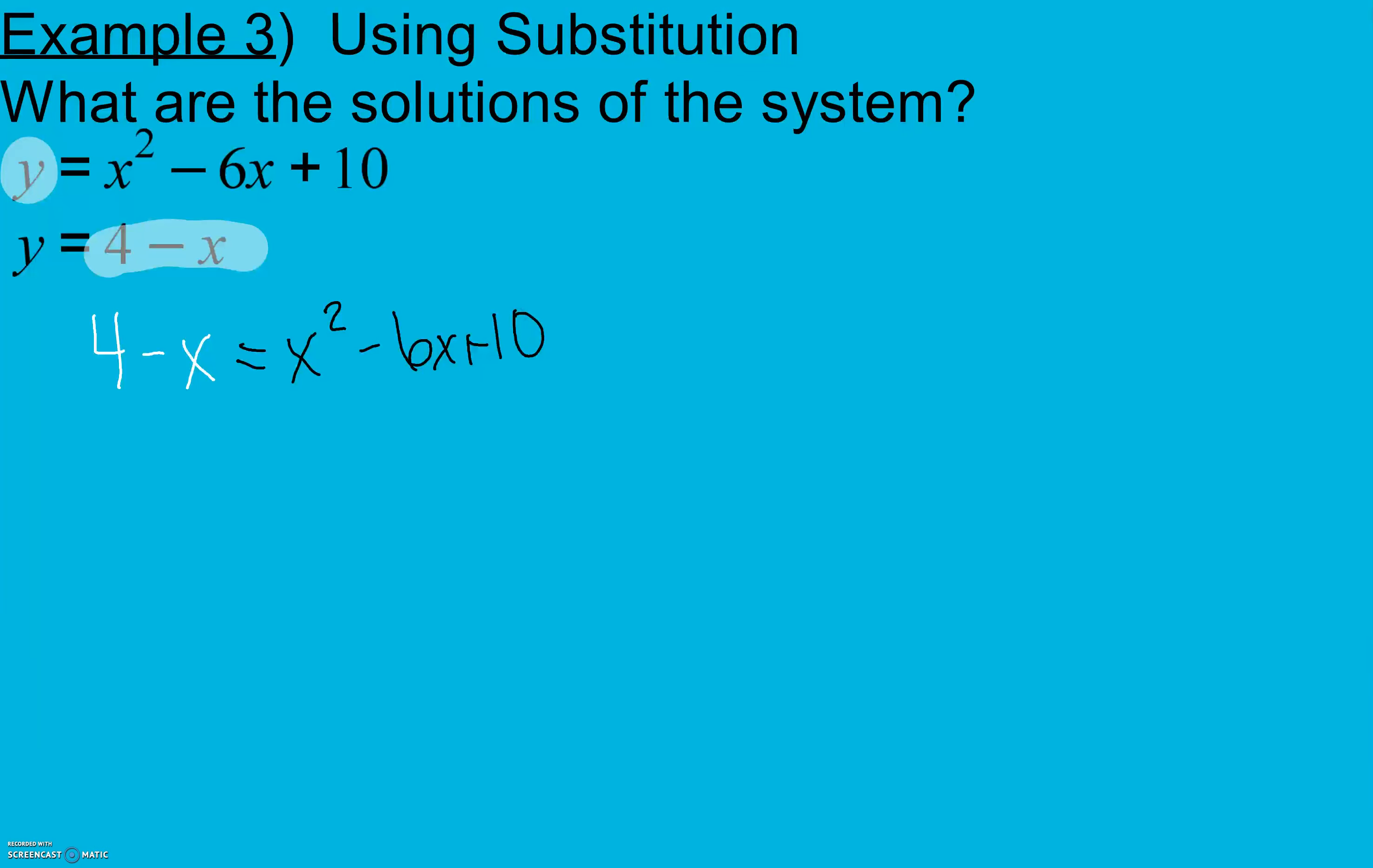Now from here, we're going to solve this the same way that we have been all chapter. Because it's a quadratic, we're going to set it equal to 0. So I'm going to subtract 4 and add x. 4 minus 4 is 0, negative x plus x is 0. So I have 0 equals x squared minus 5x plus 6.